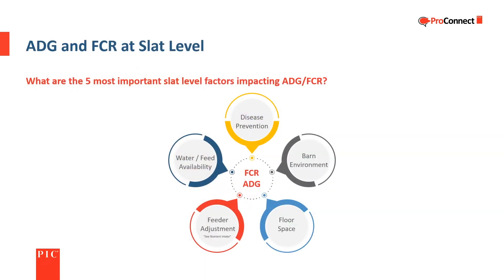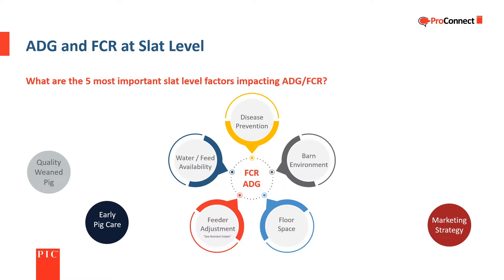A quality weaned pig coupled with correct early pig care at the start and marketing strategy at the end of the growing period play a role in feed conversion and average daily gain. But the five primary factors at the barn or slat level that impact feed conversion and average daily gain are disease prevention, barn environment, floor space, feeder adjustment, and water and feed availability.